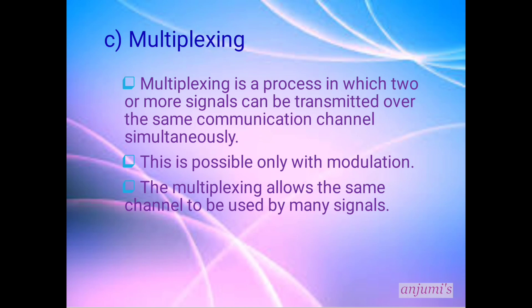Third one, multiplexing. Multiplexing is the process in which two or more signals can be transmitted over the same communication channel simultaneously. This is possible only with modulation. The multiplexing allows the same channel to be used by many signals.